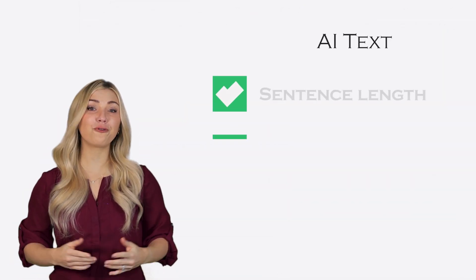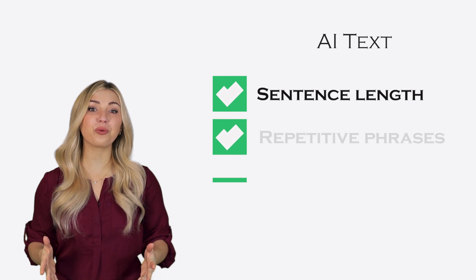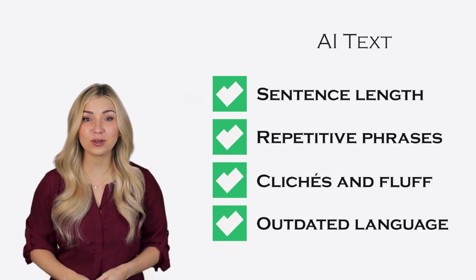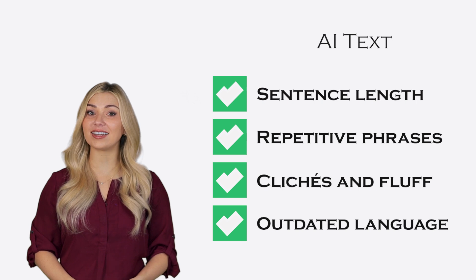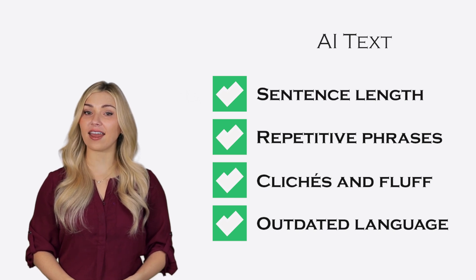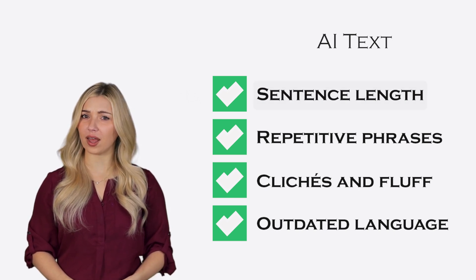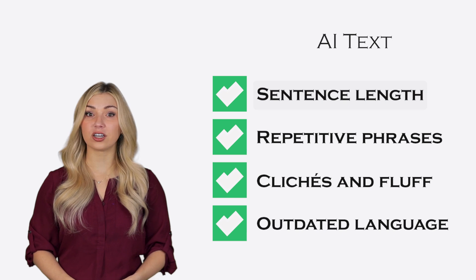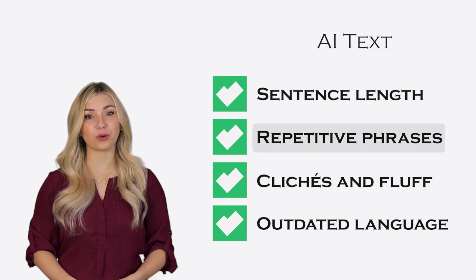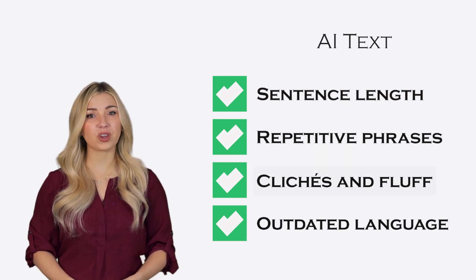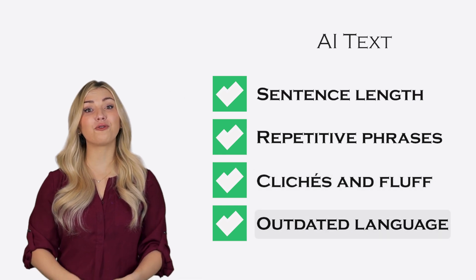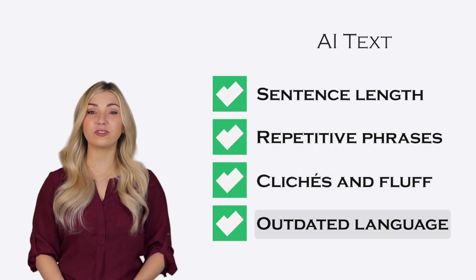There are four main reasons why the AI detector was able to correctly identify this as AI-generated text. Number one: sentence length. Number two: repetitive phrases. Number three: clichés and fluff. And number four: outdated and old-fashioned language.